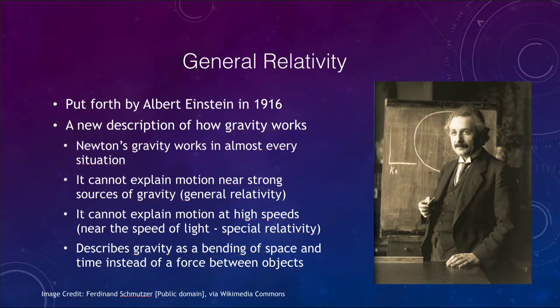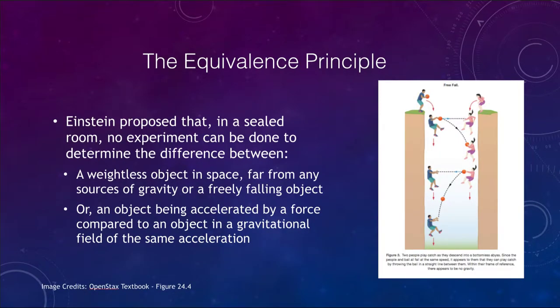So what does this mean? Well, Einstein gave us a postulate to start this out, and that postulate is what we call the equivalence principle. And essentially what the equivalence principle says is that if you are in a sealed room, no experiment can be done to determine the difference between these two things. And that means that if you are in a sealed room unable to see out, then you could be a weightless object in space, or you could be a freely falling object. So there is no way to tell the difference between those two.